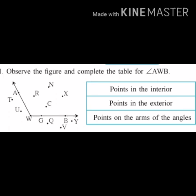Next, points in the exterior. Which are the points in the exterior? Point T, point U, point Q, point V, point Y.